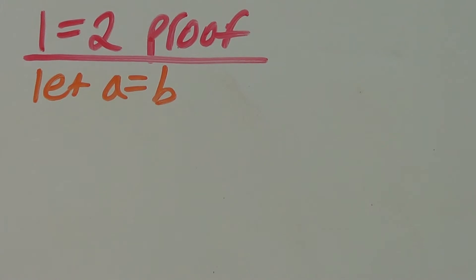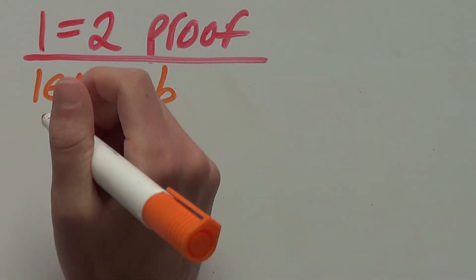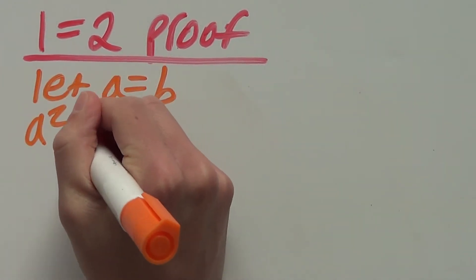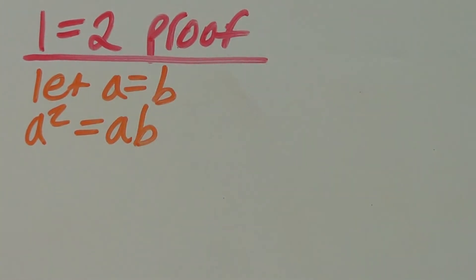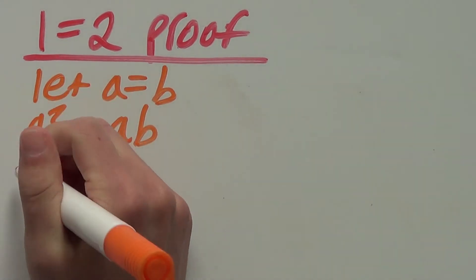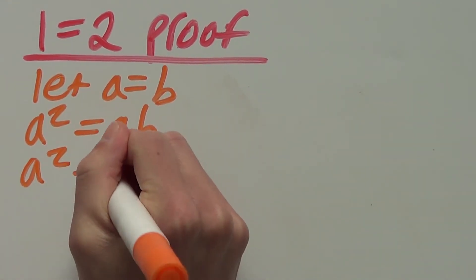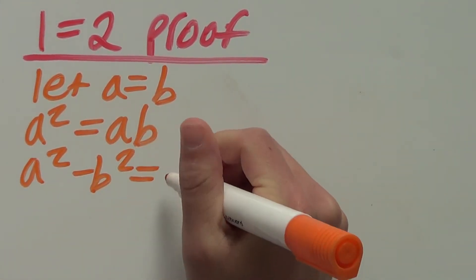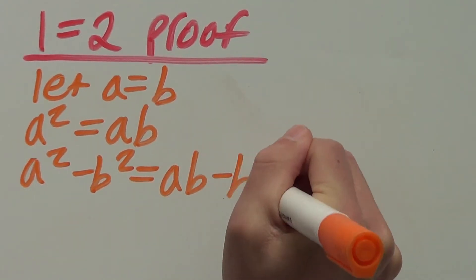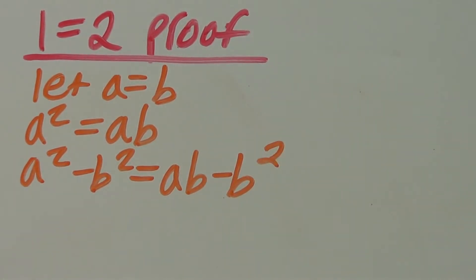Next let's multiply a by both sides. That gives us a squared equals ab. Next let's subtract b squared from both sides. So a squared minus b squared equals ab minus b squared. All legal operations.